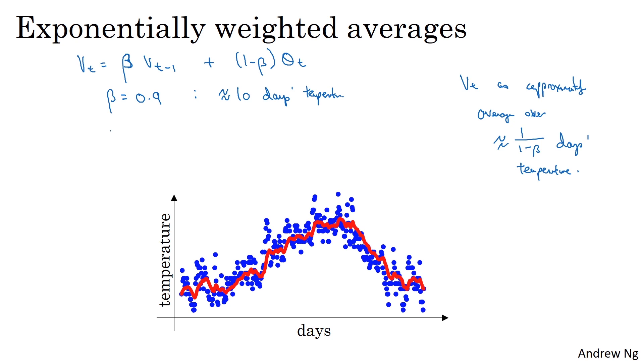Now let's try something else. Let's set beta to be very close to 1. Let's say it's 0.98. Then if you look at 1 over 1 minus 0.98, this is equal to 50. So think of this as averaging over roughly the last 50 days temperature. And if you plot that, you get this green line.